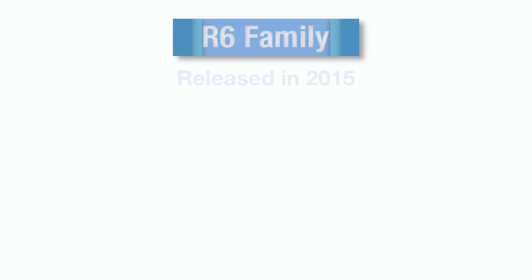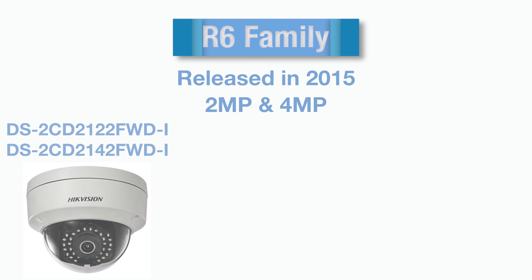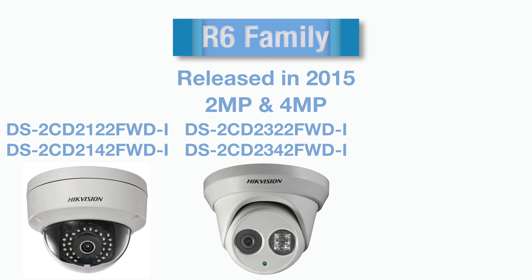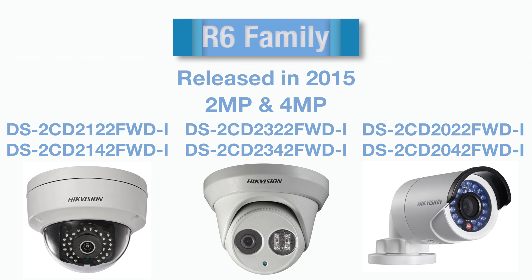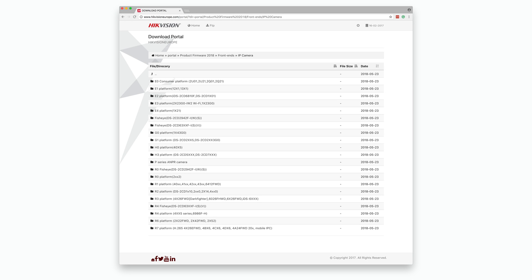With the R0 family superseded, the next big family of cameras to be released was the R6 family. Released in 2015, it was made up of 2MP and 4MP models. These included the 2122 and 2142 dome camera, the 2322 and 2342 turret camera, the 2022 and 2042 mini bullet camera, and many more. Unlike the R0 family, most R6 cameras are still available to buy, but given the technology improvements in the latest family and the very small price difference, there is really no reason to buy R6 cameras as a new customer. Existing R6 owners should follow the same firmware instructions as R0 owners. You can find the latest R6 firmware in the folder labelled R6 Platform. If the firmware is out of date, follow the instructions on the forum post mentioned earlier.